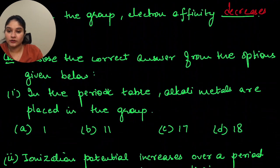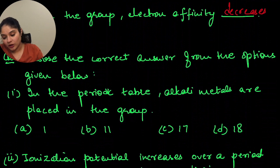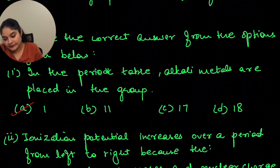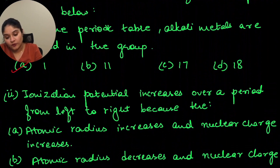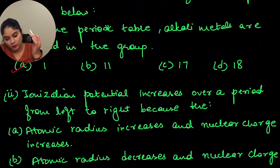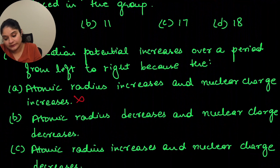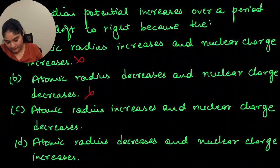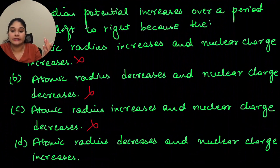Choose the correct answer: in the periodic table, alkali metals are placed in the first group. Next: ionization potential increases over a period from left to right. The options state various reasons — atomic radius increases and nuclear charge increases (wrong); atomic radius decreases and nuclear charge decreases (wrong); atomic radius increases (wrong — it decreases). The correct answer is: atomic size decreases and nuclear charge increases.